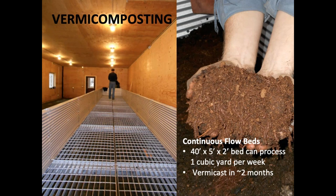For vermicomposting, here's an example of a continuous flow bed with a two-month retention time, two feet deep. Materials are fed in on top and cut off on the bottom. A 40-by-5-foot footprint can process about a cubic yard per week. It's a fast process but takes up a lot of space per unit of throughput, though it produces a very high value product in vermicast.